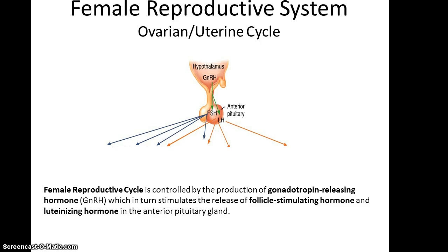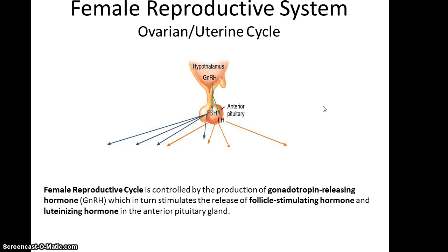The ovarian-uterine cycle is the control of the ovaries and the uterus in a coordinated way through hormones. When talking about hormonal control, we start with the hypothalamus and its control over the anterior pituitary gland's ability to release follicle-stimulating hormone and luteinizing hormone.